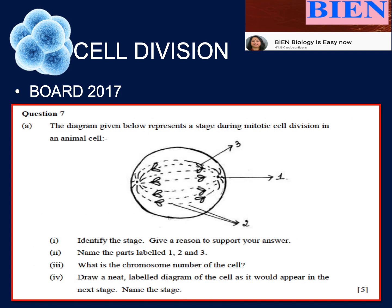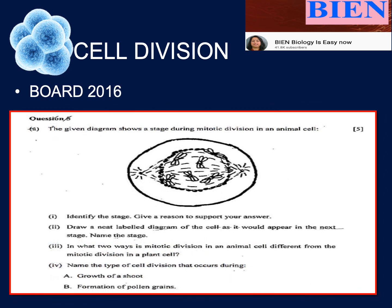The next question is from the 2017 board paper, again a stage in Section B. The stage shown resembles the one in 2019. You had to identify the stage and give reasons, label the parts, state the chromosome number, draw a neat diagram of the stage which would appear next, and also name that next stage. As you can see, the questions remain almost the same — they have just been twisted slightly.